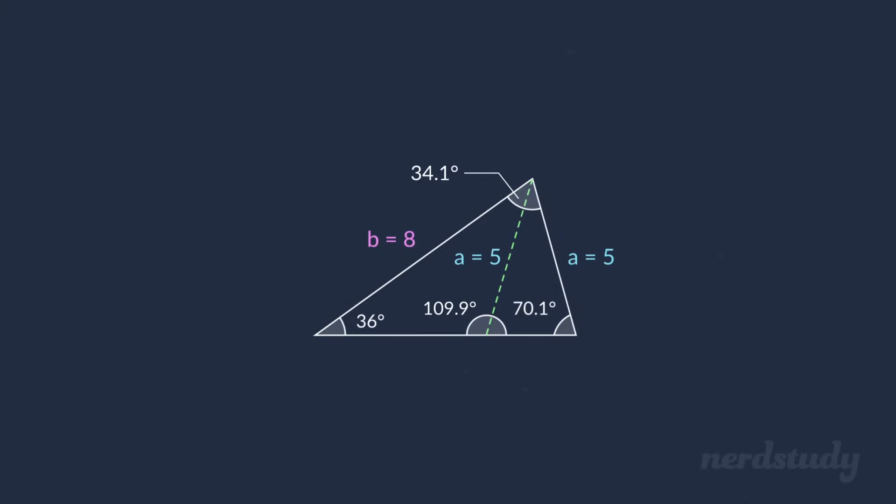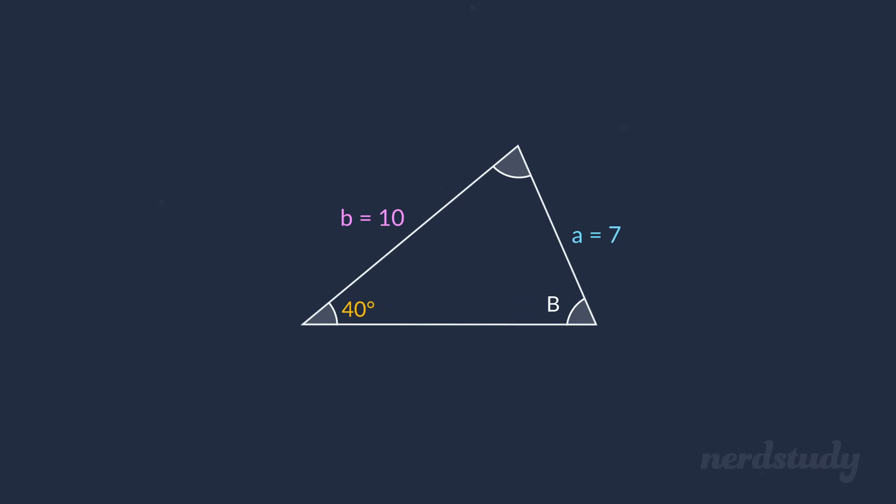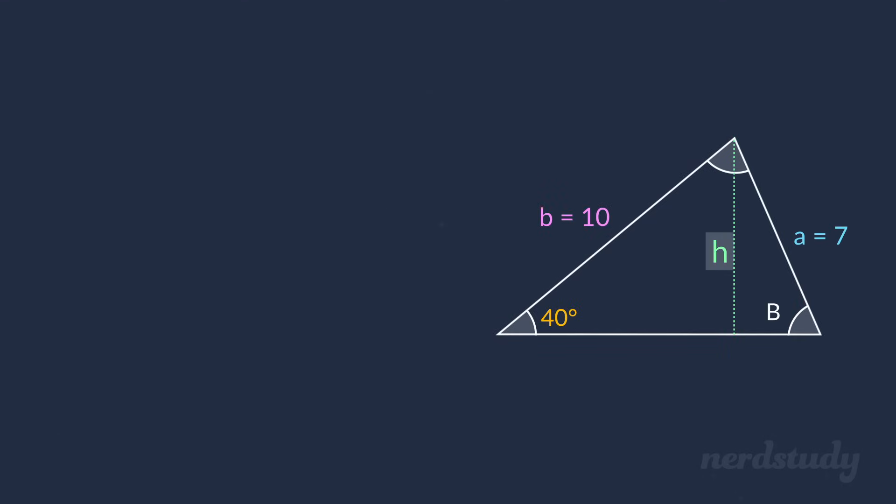So there we have it, our two different triangles based on the same information provided. Let's try one more example of an ambiguous case together. Here is our triangle with the following information. So to begin with, let's check to see if the side opposite to the angle, namely side a, is greater than the height of the triangle. What we do again is identify the height and use sine of x equals opposite over hypotenuse to get the following.